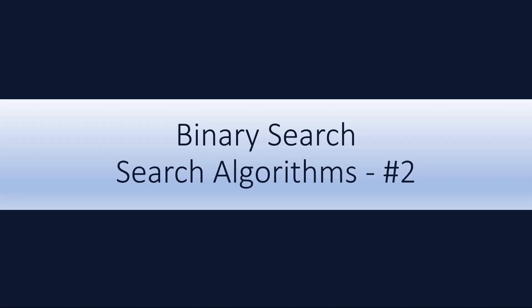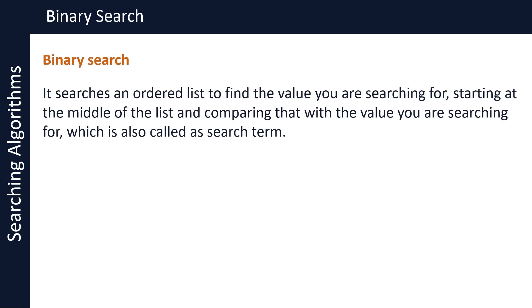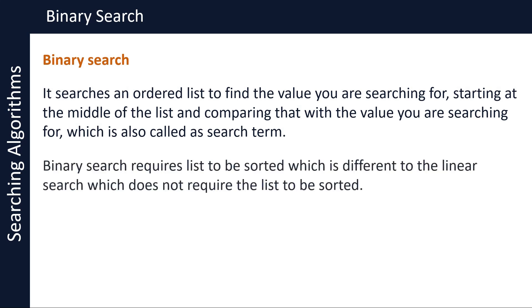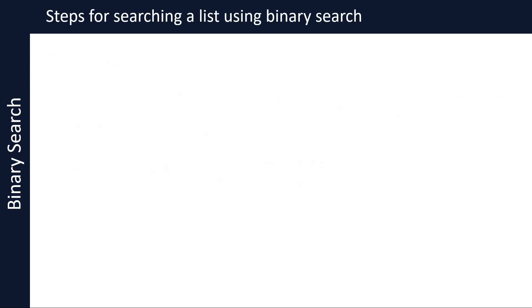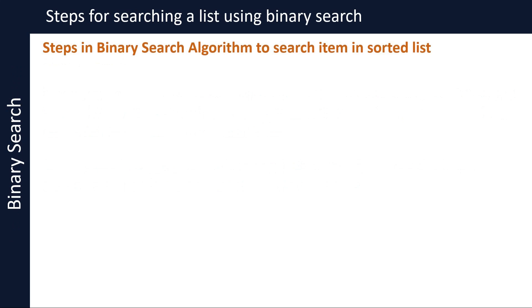In part 2 of this video series about search algorithms, we will take a look at the binary search algorithm. Binary search algorithm searches an ordered list to find the value you are searching for, starting at the middle of the list and comparing that with the value you are searching for, which is also called a search term. Note that binary search requires the list to be sorted, which is different to linear search which does not require the list to be sorted.